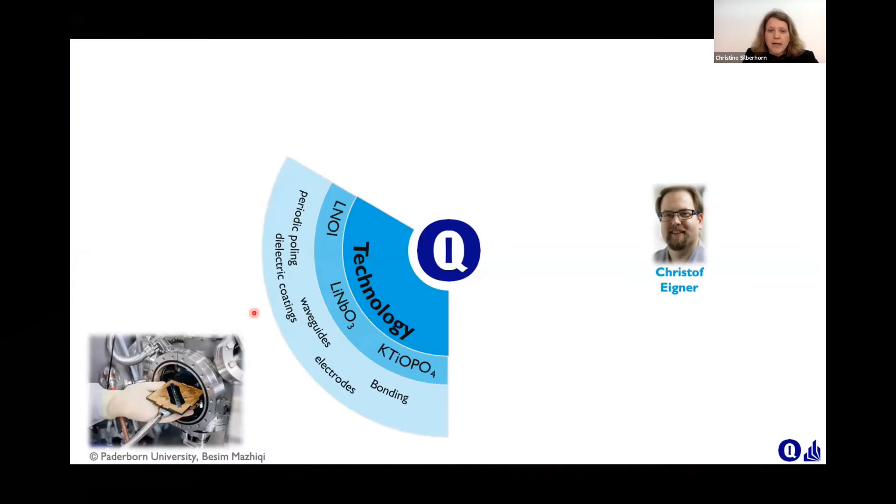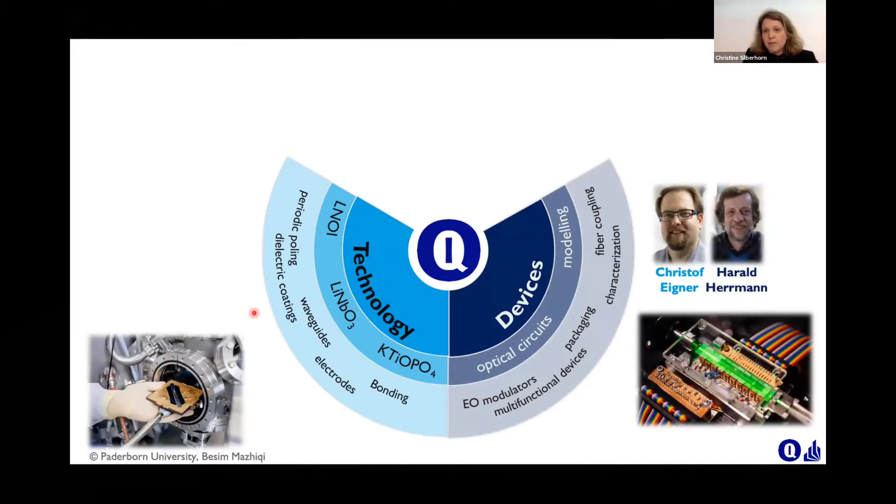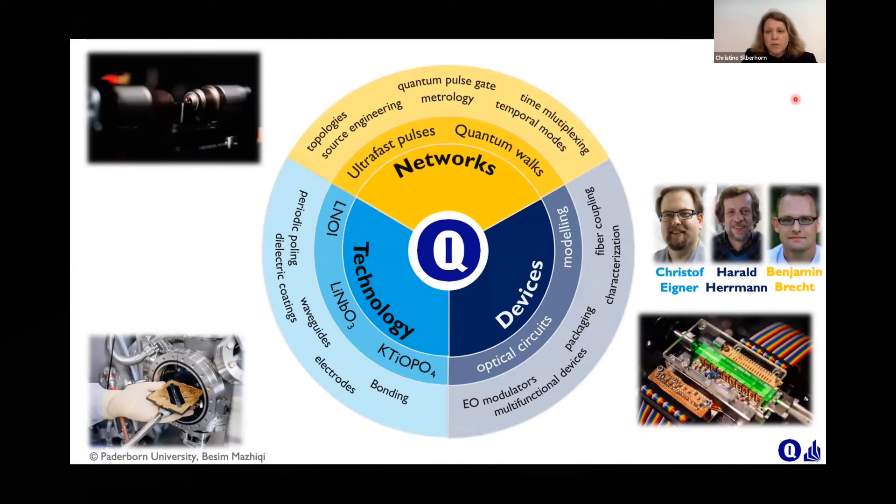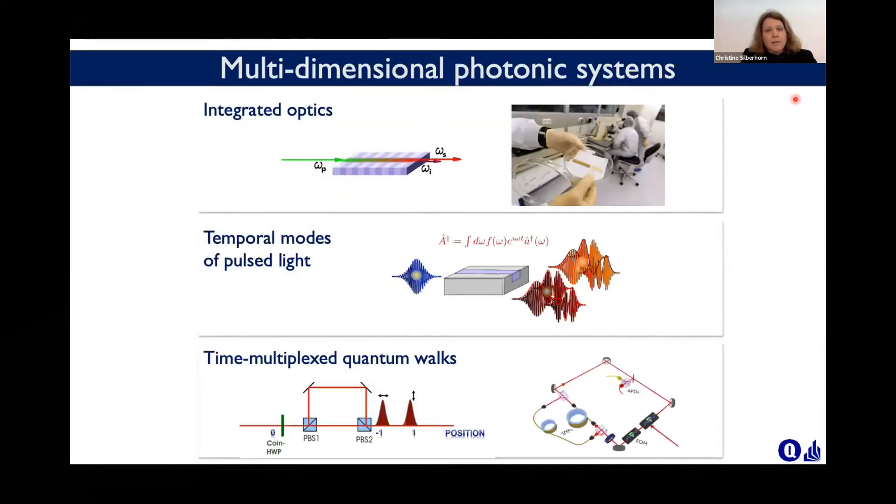Let me start briefly to introduce my group. Because we actually have different subgroups where we do technology, fabricate devices, bring them to the optics labs, and try to fabricate our own devices. And finally, we have the subgroup what we call quantum networks, which is really more applied to how we can transfer theoretical concepts to real world applications. The group leaders are Christoph Aigner, Harald Hermann, and Benjamin Brecht.